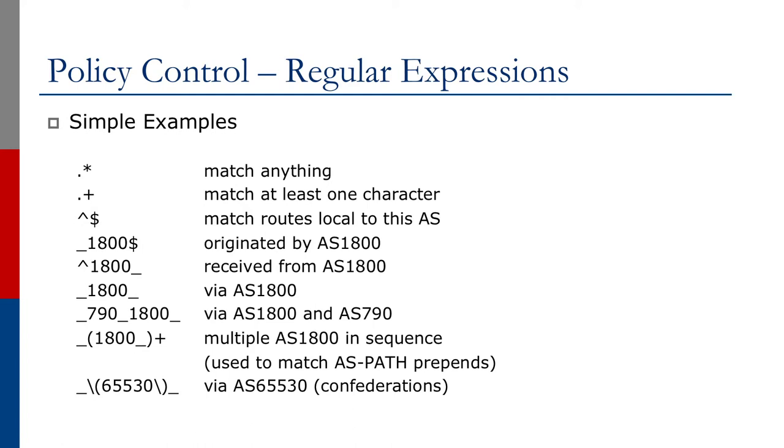And the next one shows you how you'd say 790 followed by 1800 and then it could be in the middle, beginning, or end. In some cases, people might have prepends of their AS number and the next one shows you how you match them. So you'd have multiple 1800s inside the sequence. Lastly, if you want to match something that is part of a confederation, you'd need to escape the brackets as shown with the backslashes. And this would match, for this example, AS 65530.